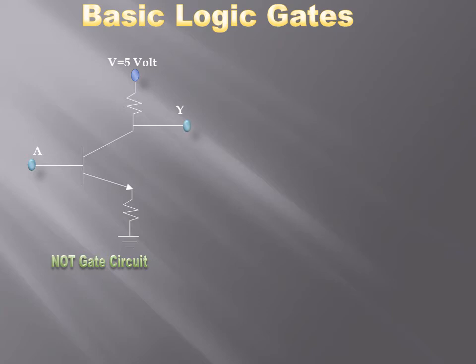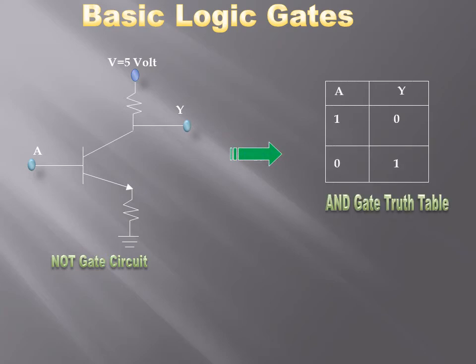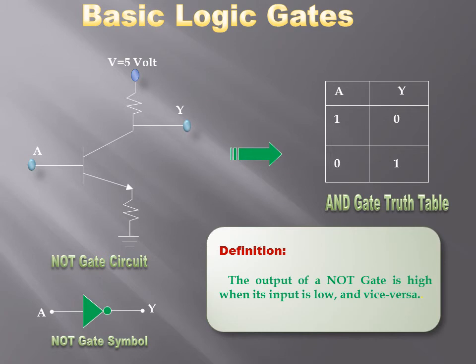This circuit performs logic negation: when high voltage is present at the input, the output is pulled low; when no voltage is present at the input, the output remains high. The truth table shows: when A is 1 (high), output is low; when A is 0 (low), output is high. The symbol of this NOT gate is shown, and we define it as: the output of a NOT gate is high when its input is low, and vice versa.